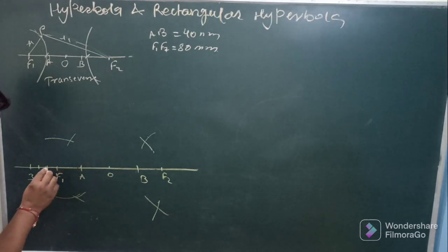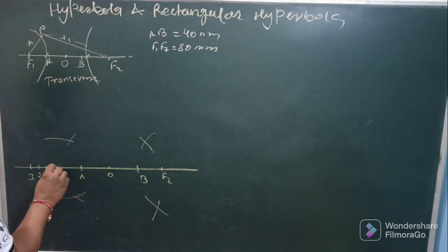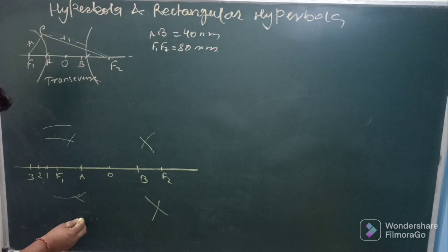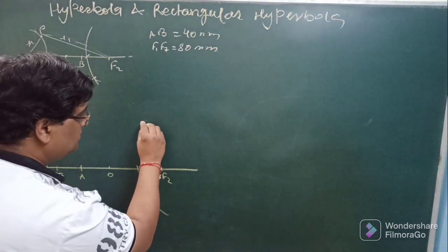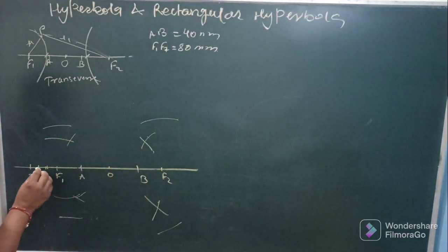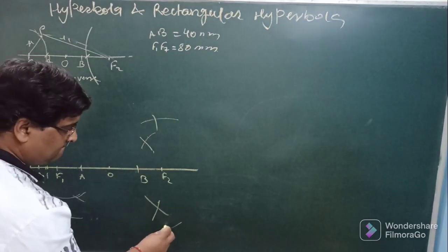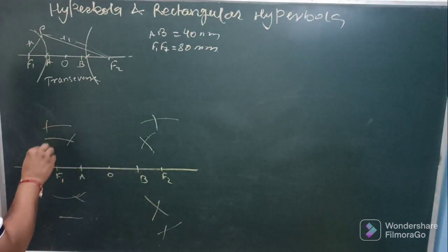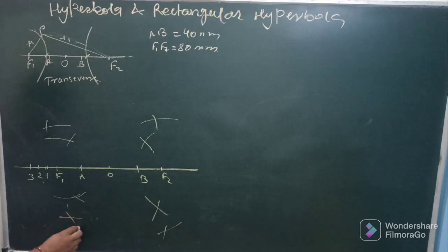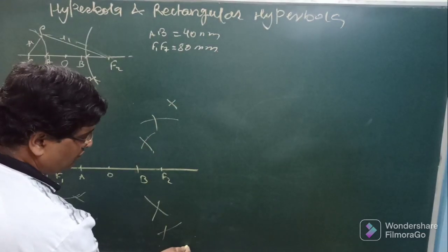Then take a2 to two this one and take f as center draw two arcs this side. Similarly f2 as center draw two arcs this side also. Then taking b2 to two taking f1 as center cut these two arcs. Taking f2 as center these two arcs may be cut. Similarly you can find out with the 3.3 you can find out one more point here.